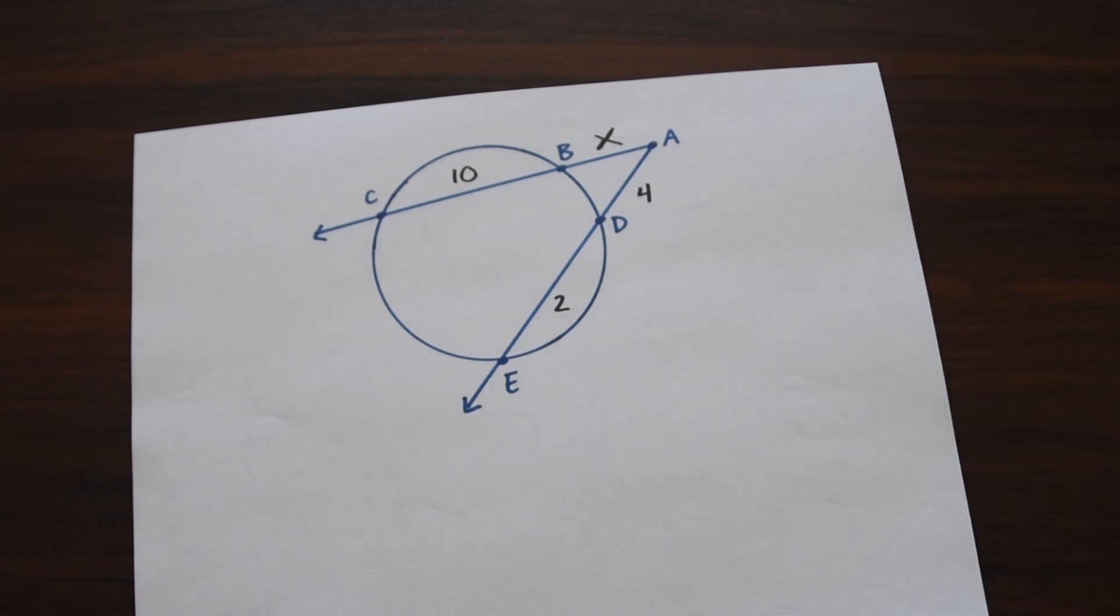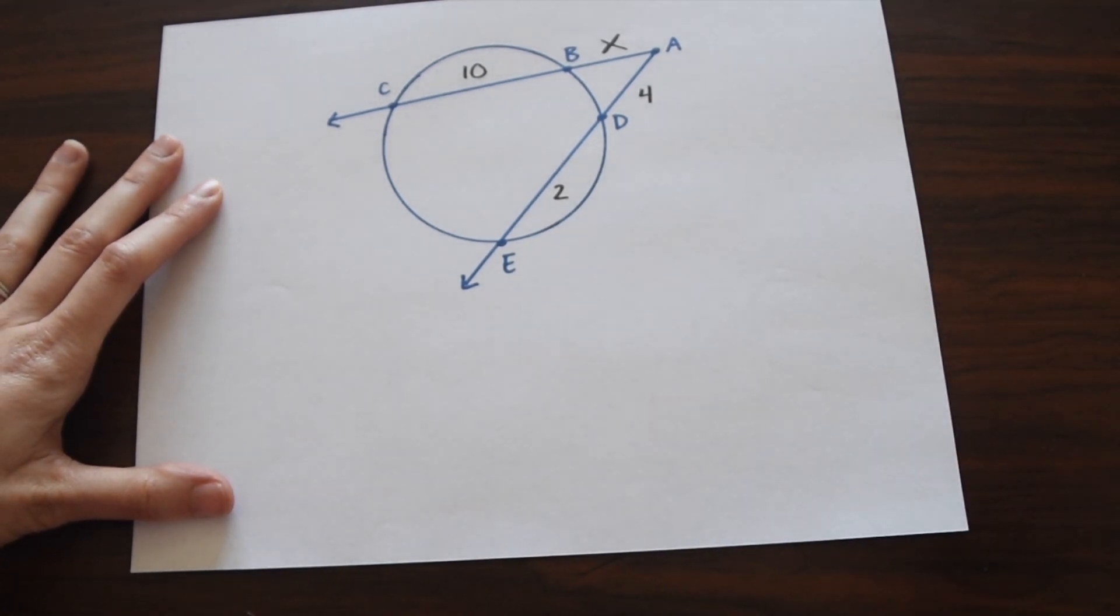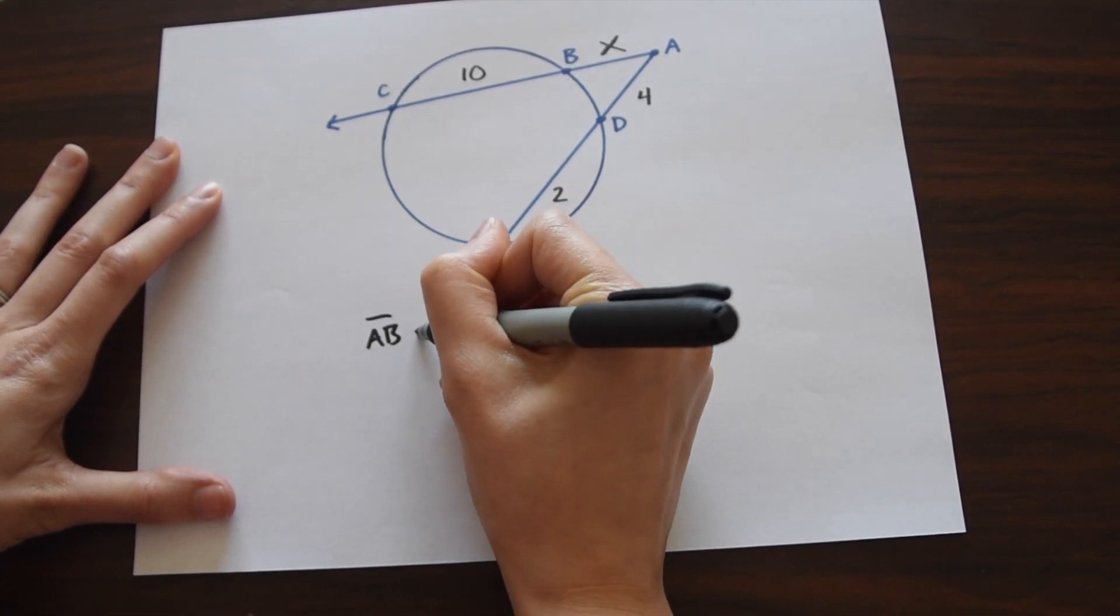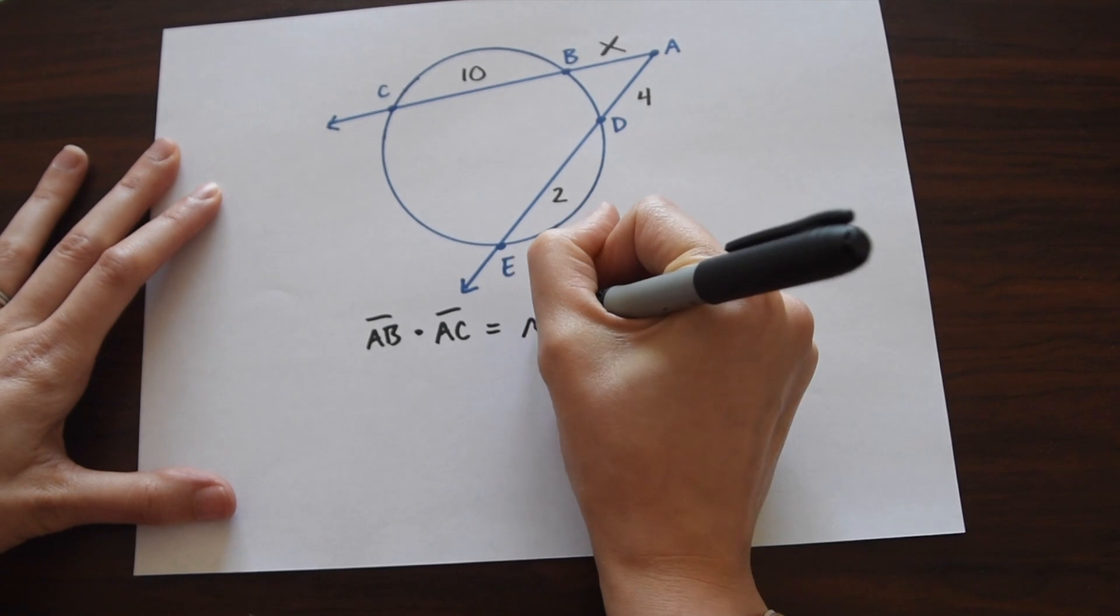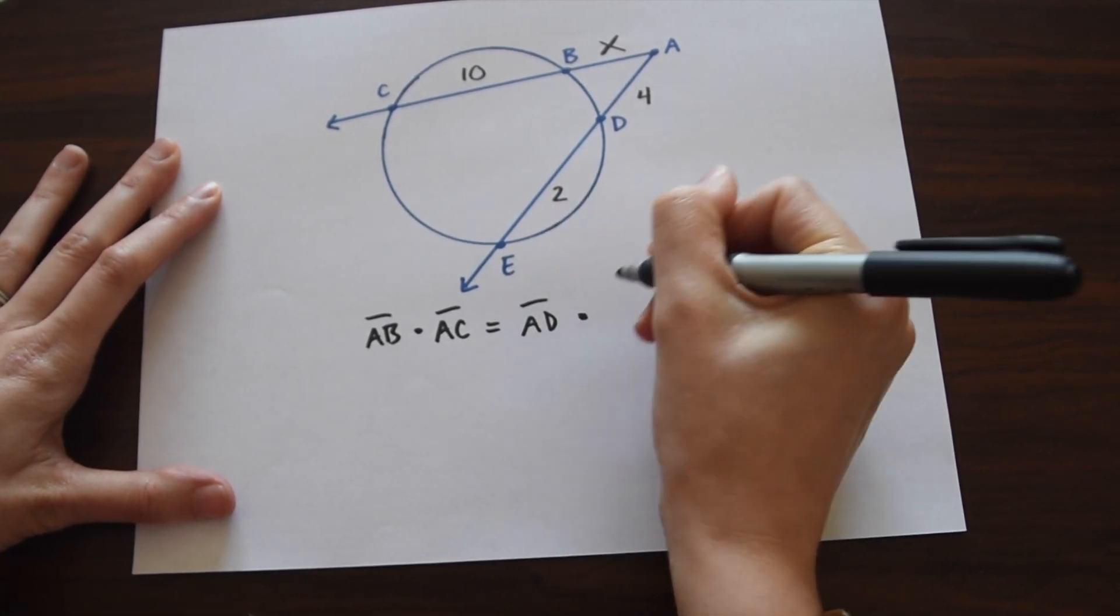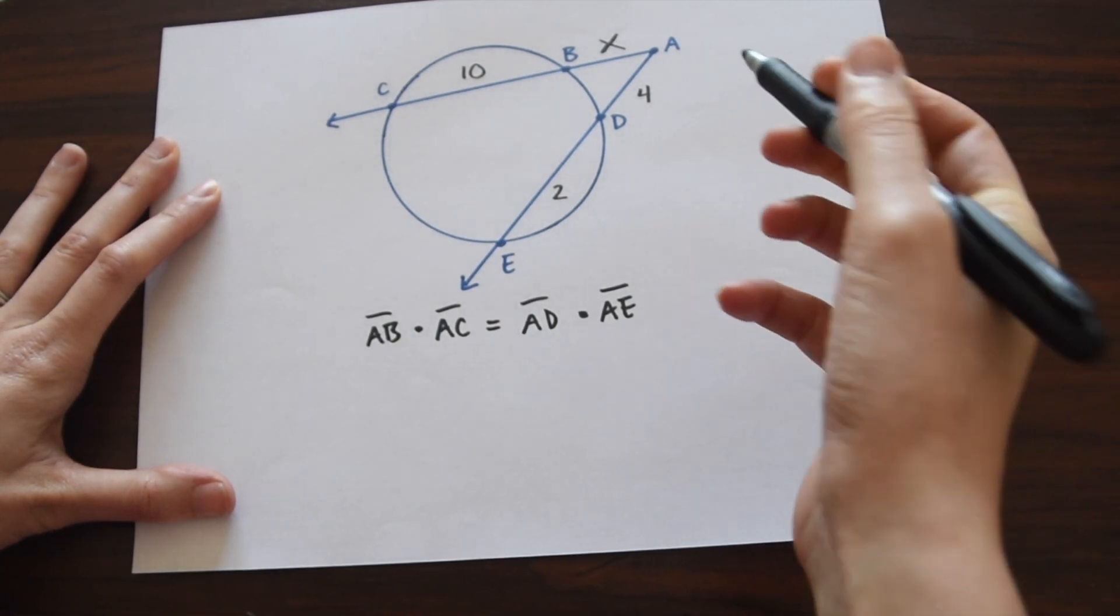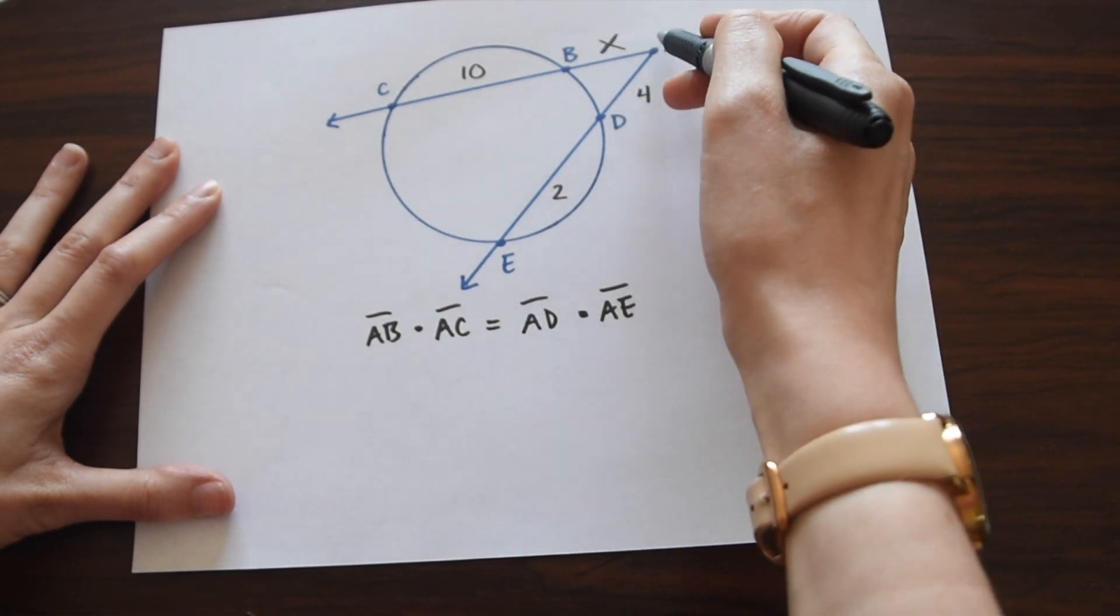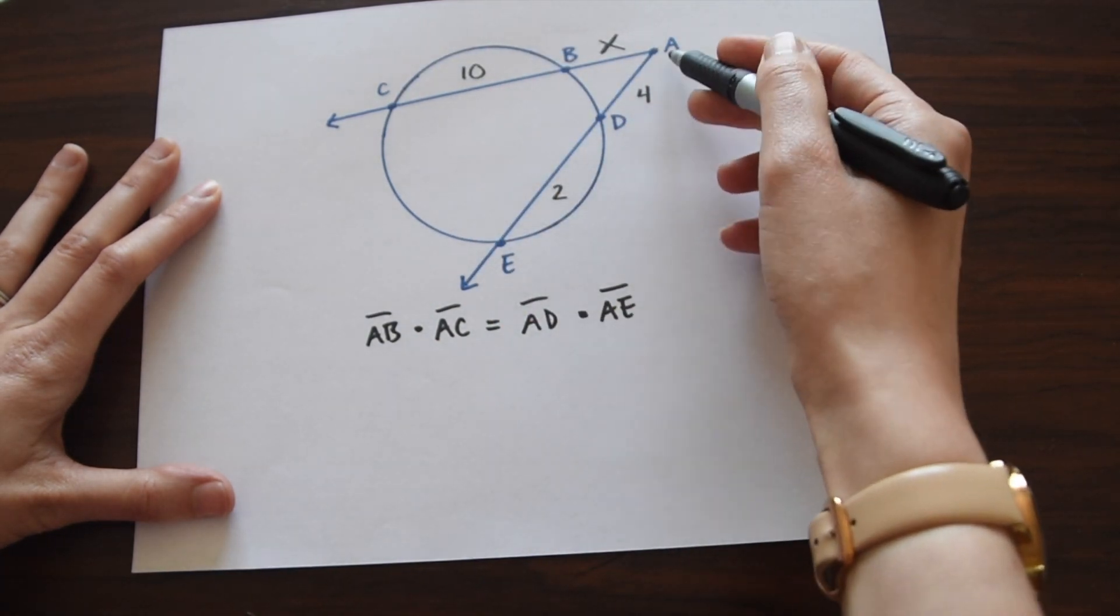So first, before we do anything, let's write out our intersecting secants theorem, our formula. So we have AB times AC is equal to AD times AE. So again, we're just looking at this small part AB times this whole thing AC, and then this is equal to AD, this little segment, times AE, the entire segment.